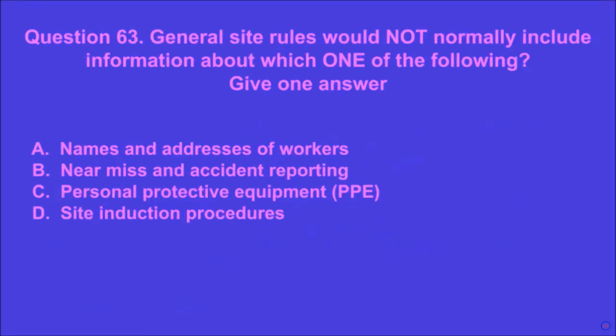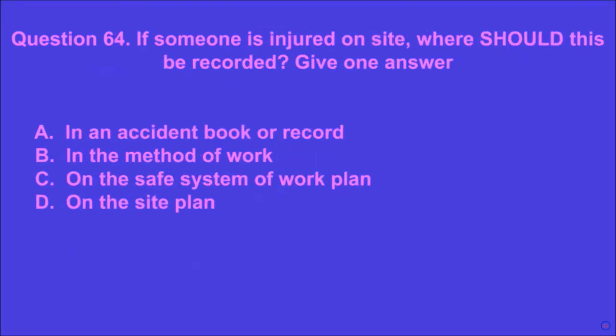Question 63: General site rules would not normally include information about which one of the following? Give one answer. A: names and addresses of workers, B: near miss and accident reporting, C: personal protective equipment (PPE), D: site induction procedures. A is the correct answer.